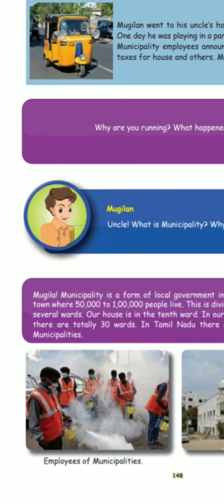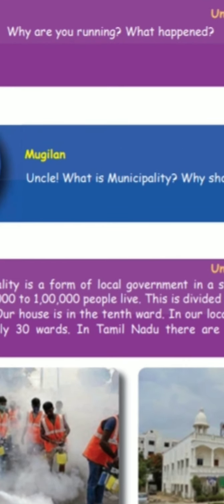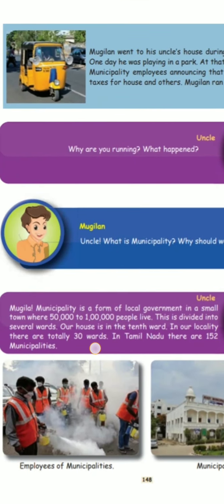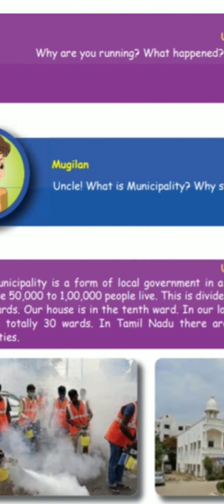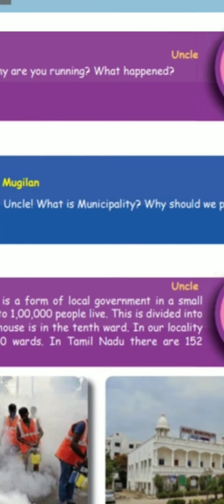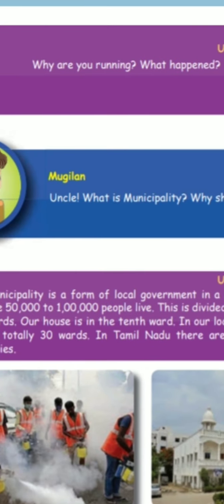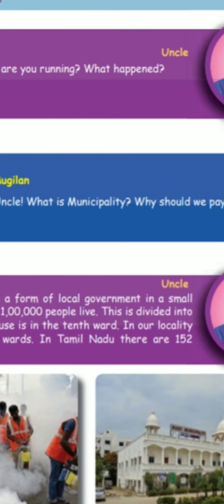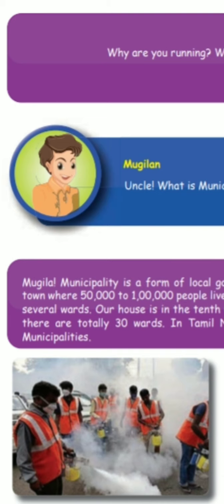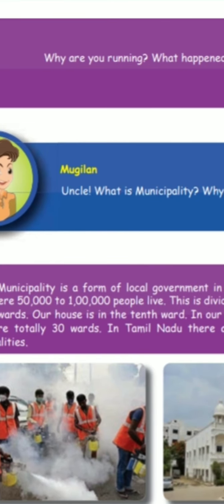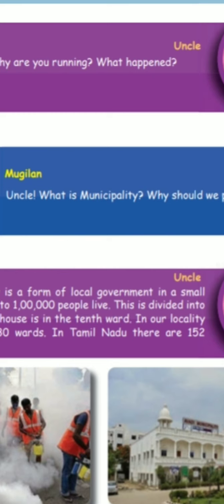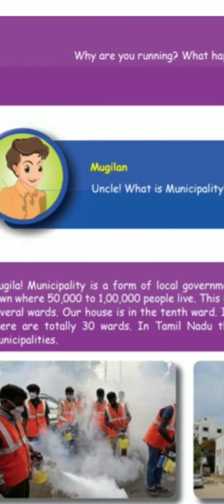His uncle said: 'Mugilan, a municipality is a form of local government in a small town where 50,000 to 100,000 people live. This is divided into several wards. Our house is in the tenth ward. In our locality there are totally 30 wards. In Tamil Nadu there are 150 wards.'